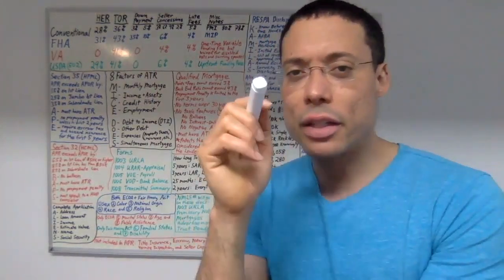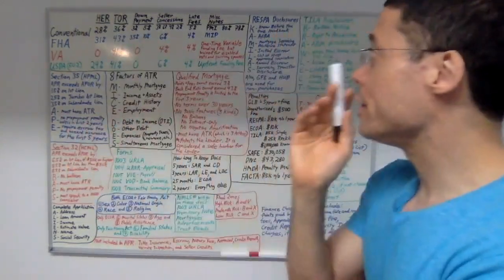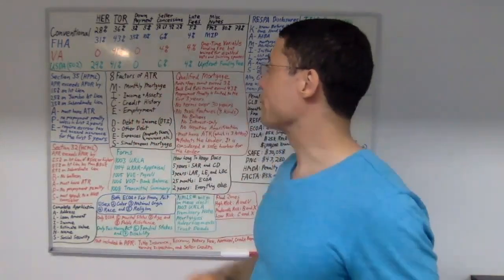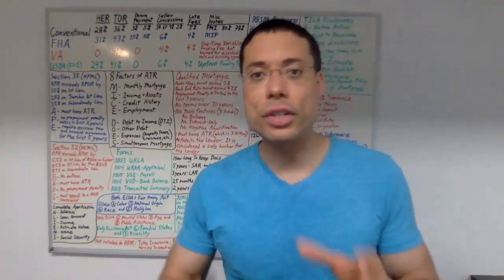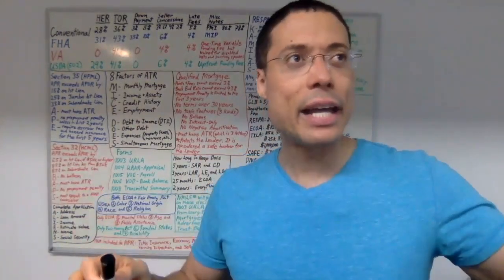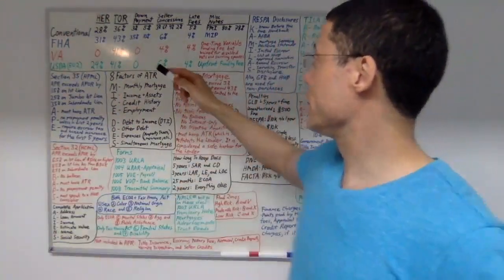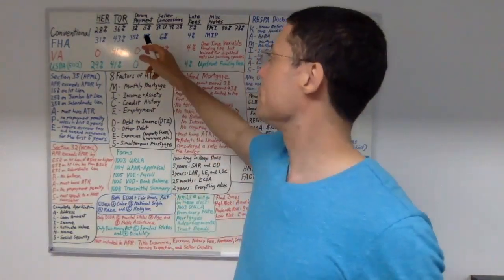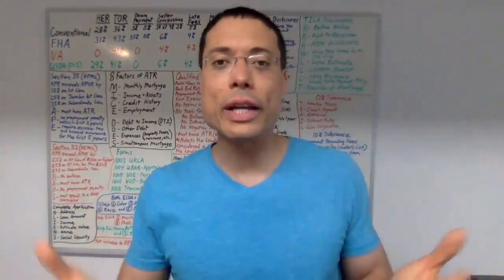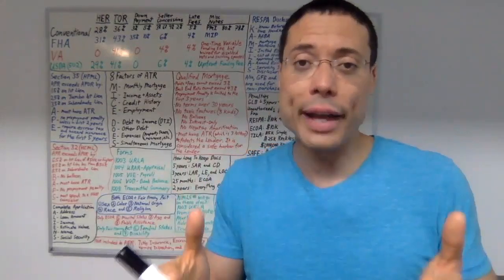Regarding down payments on FHA loans: if the borrower's credit score is 580 or above, then the minimum down payment is 3.5%. If the borrower's credit score is anywhere from 500 to 579, then the minimum down payment is 10%. And if the borrower's credit score is below 500, then that borrower is not eligible for an FHA loan.